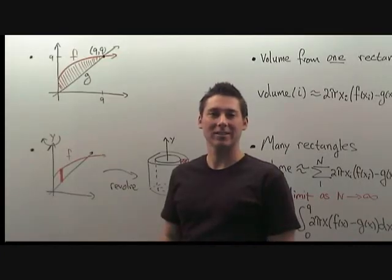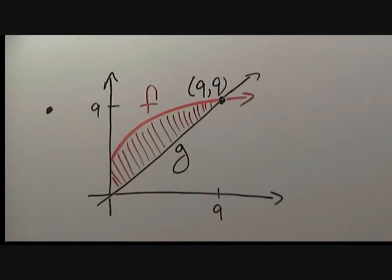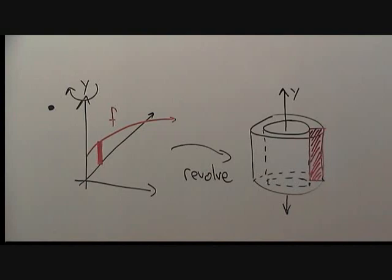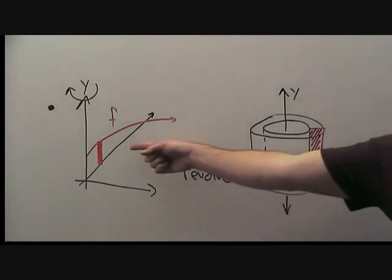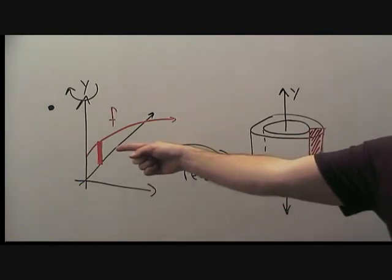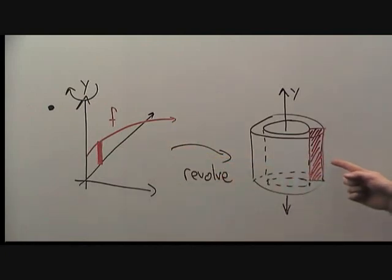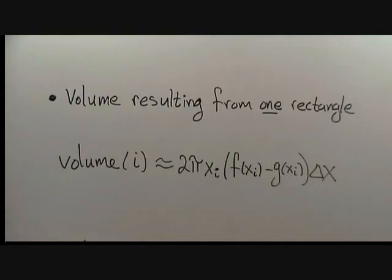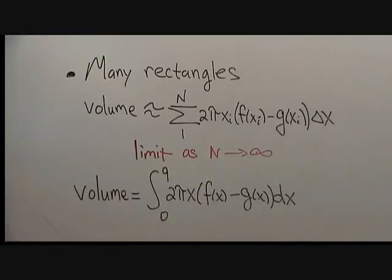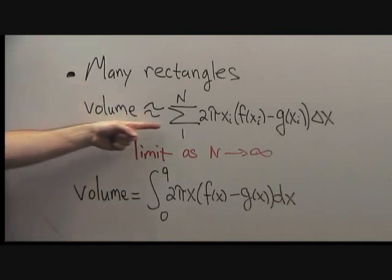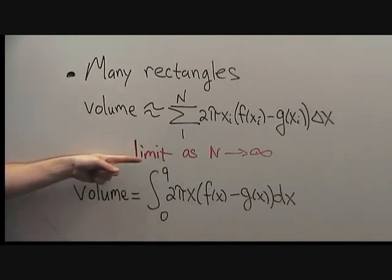Let's do a quick recap. The first and most important part of this problem was to get an accurate sketch of our region. Then we decided to use small vertical rectangles as our test shape. We revolved those around the y-axis to find that our test volume is a cylindrical shell. Then we computed the volume resulting from one rectangle. We called this the i-th volume, and it was approximately 2πxi(f(xi) - g(xi))Δx. To conclude, we took the volumes resulting from many rectangles. So the total volume was the sum of the small volumes. In the limit, as N goes to infinity, we recovered this integral for the volume.